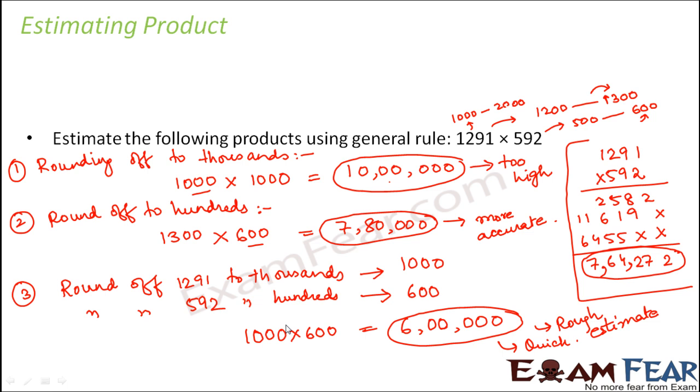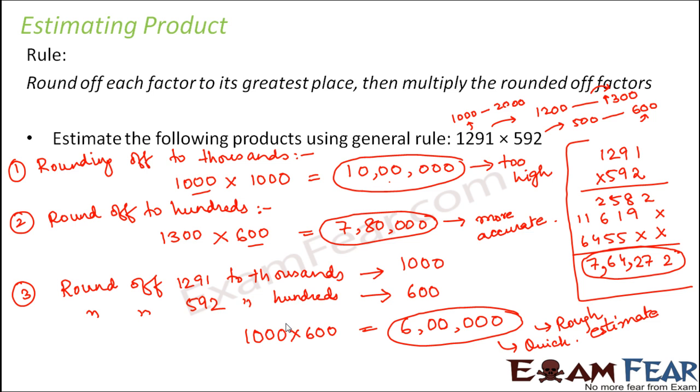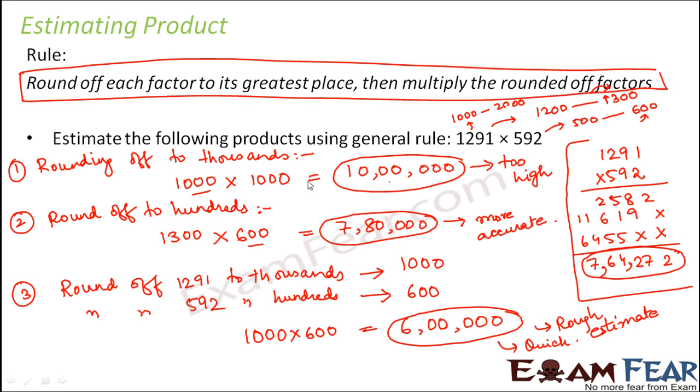Considering this, the rule that was made for estimating product was this: we round off each factor to its greatest place and then multiply the rounded off factors. Basically, what are factors? Factors are nothing but each of these numbers. Like 1291 is a factor, 592 is a factor. So we round off each of these factors to its greatest place. For example, for 1291, the possible places are tens place, hundreds place, thousands place. So the greatest place is thousands place, so we rounded it off to thousands place. Similarly, for 592, it could have been rounded off to tens place or hundreds place. So the greatest is hundreds place, so we rounded off each factor to its greatest place.